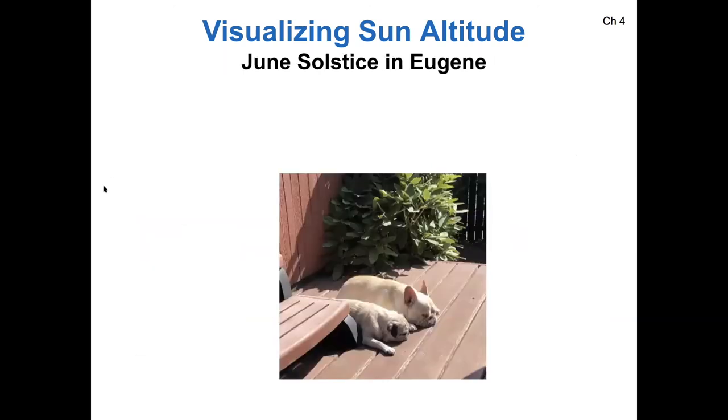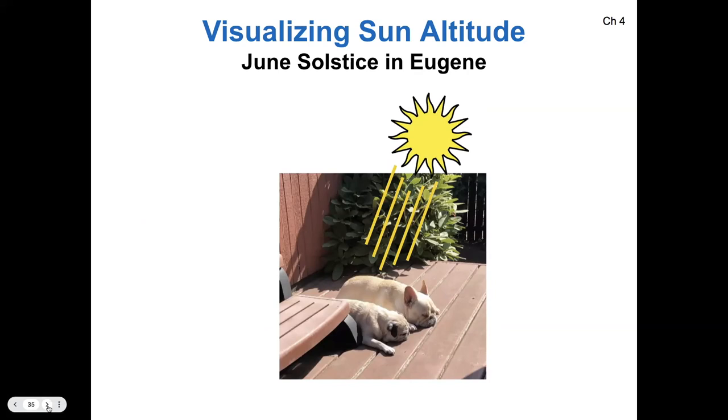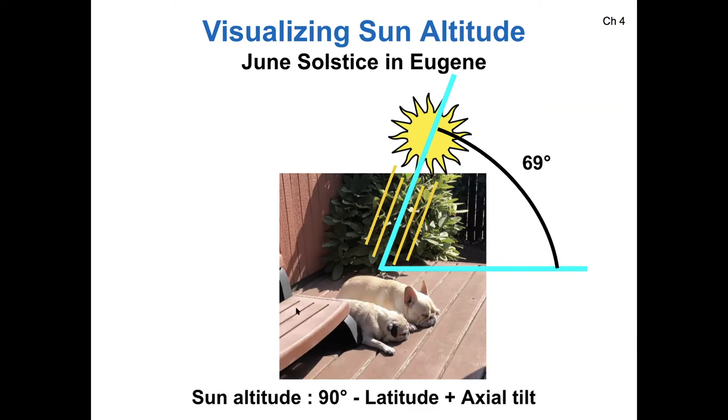What does that look like in June solstice in Eugene? Well, it just means that the sun is not directly overhead. It's at an angle of 69 degrees from the horizon, and that's as far above the horizon as it will ever get in Eugene. For the Northern hemisphere, June solstice is 90 minus the latitude plus the axial tilt.